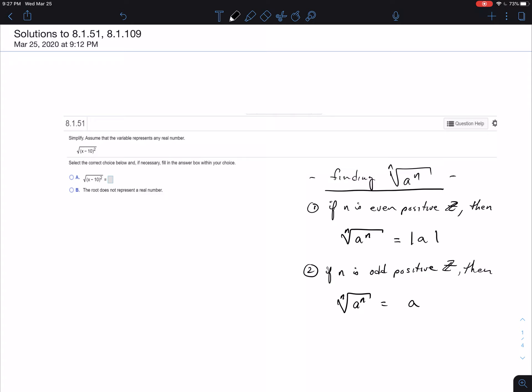So very quickly, to do this problem you have to realize that the index number is of course 2 because it's square root. Remember, we don't usually write that. But if I can remind you of how you find some root of a base raised to the same power. When you do that,